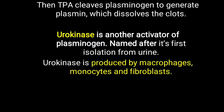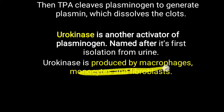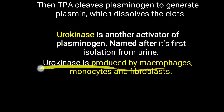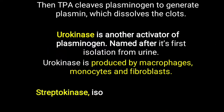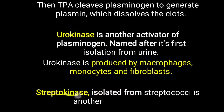Urokinase is produced by macrophages, monocytes, and fibroblasts — cells found at the site of injury. From the site of injury, these cells release urokinase, which again activates plasminogen and helps dissolve the clot.